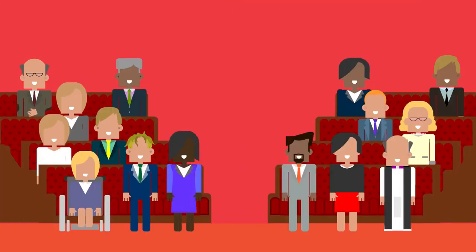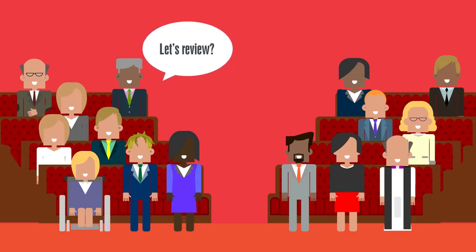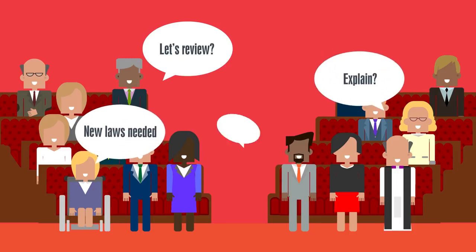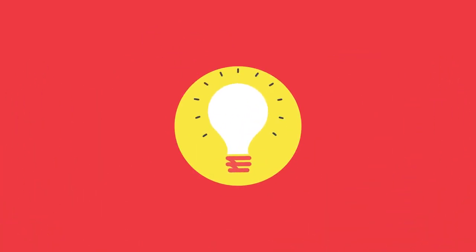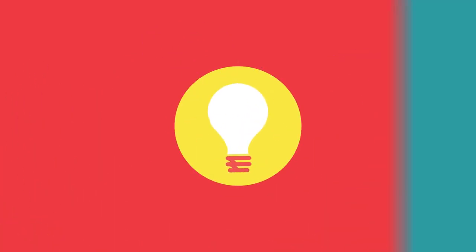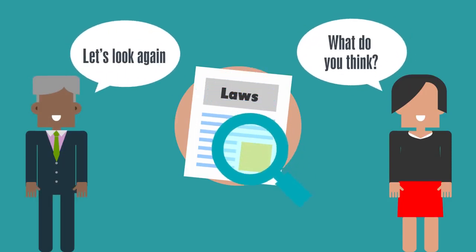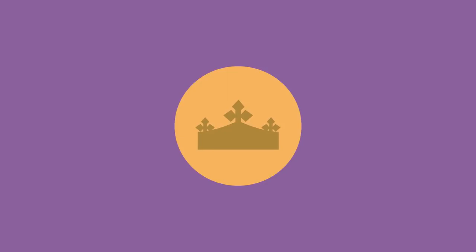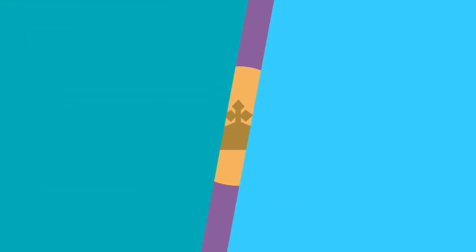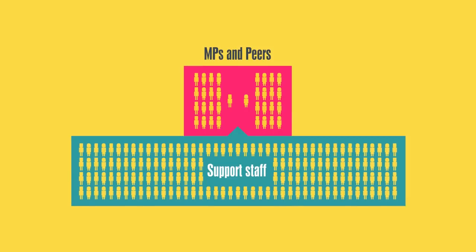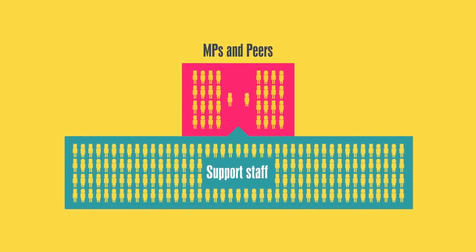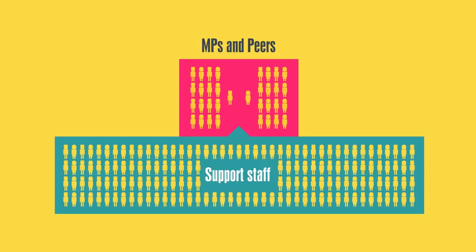The House of Lords is the second chamber and shares the making and shaping of laws with the House of Commons. It has around 800 members, made up mostly of life peers, and also includes hereditary peers and bishops. Lords are selected for their knowledge and experience, and hold government to account by using their expertise to look at laws and issues in detail. The monarch's role is mainly ceremonial — they meet the Prime Minister once a week to hear what's going on in Parliament and formally agree every new law. There are also people working behind the scenes who support the work of Parliament: clerks, librarians, researchers and many more.